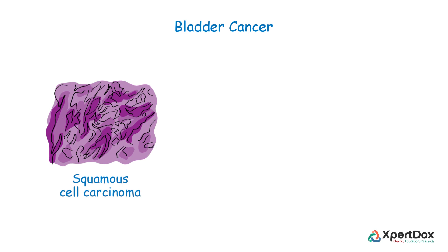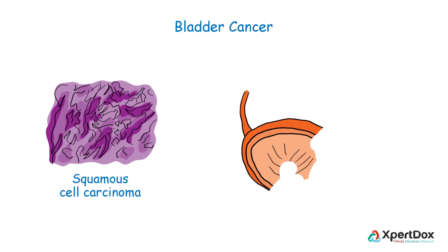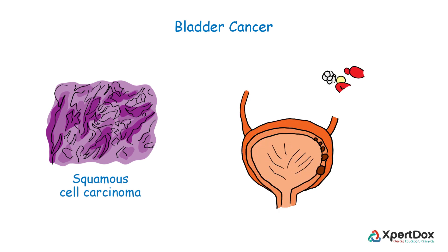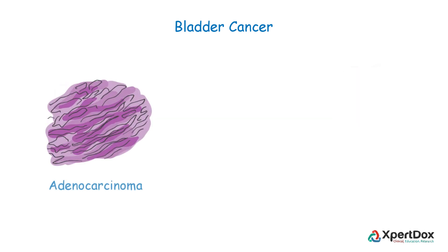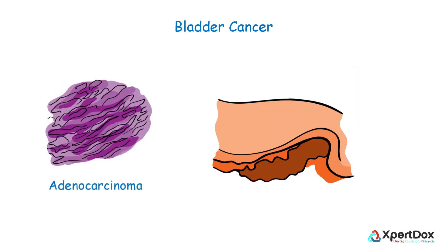Squamous cell carcinoma begins in the thin, flat cells, and may form after long-term infection or irritation. Adenocarcinoma begins in glandular cells that form a mucus-like substance and is the rarest type of bladder cancer.